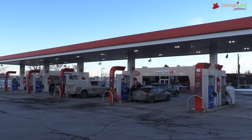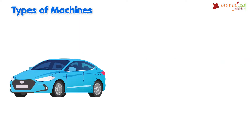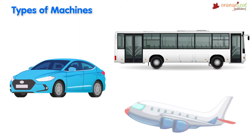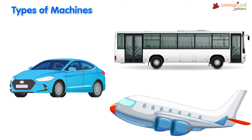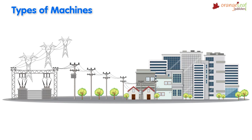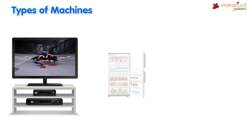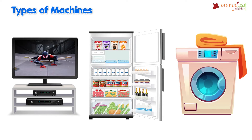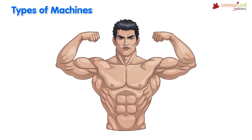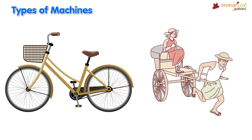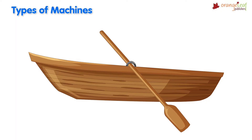Types of machines: Some machines require fuel to work, like cars, buses, aeroplanes, etc. Some machines require electricity to work, like televisions, fridges, washing machines, etc. Some machines require human power to work, like bicycles, rickshaws, boats, etc.